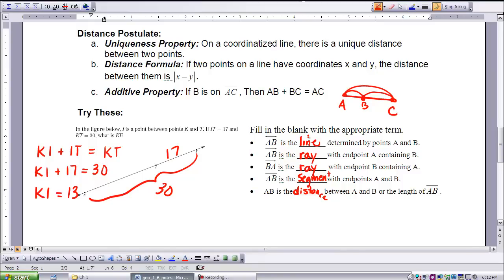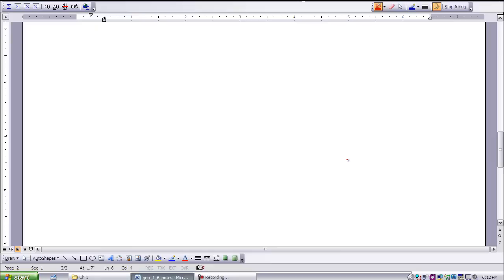If you were to fill in the blanks with the appropriate term, here we have a symbol. This is the line determined by points A and B. This symbol here is the ray with endpoint A containing B. Here we have a similar symbol, and that is the ray with endpoints B containing A. Here we have a segment with endpoints A and B, and here is the distance between A and B, or the length of segment A, B. This concludes lesson 1-6.